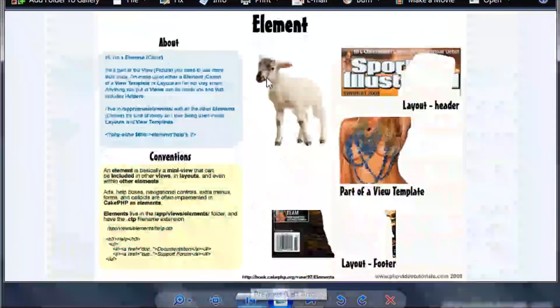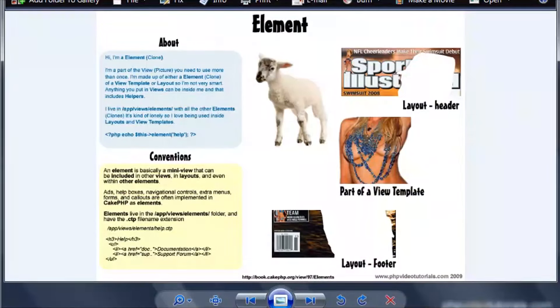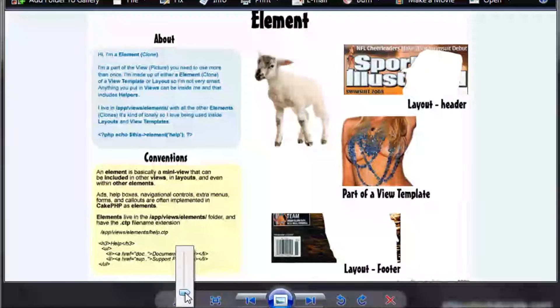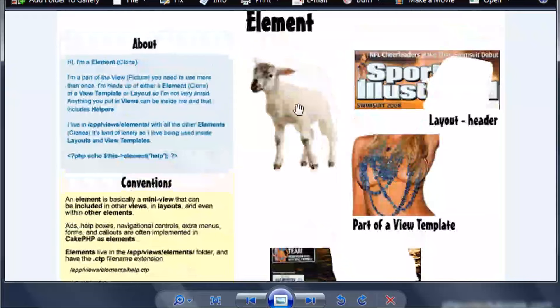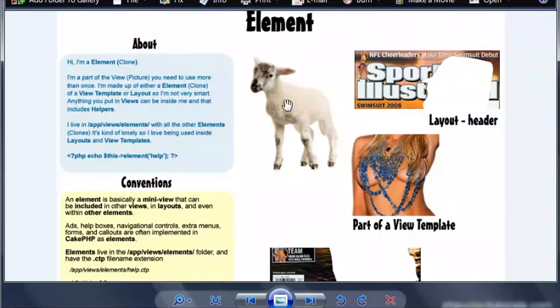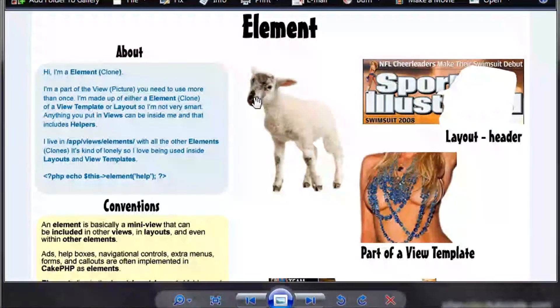Alright. So I see elements as a sheep. Remember Dolly the sheep? She was a clone. The first ever thing, living creature they cloned. Her name was Dolly. So I'm going to use Dolly. It's not actually Dolly. This is a cuter sheep. This is a little lamb. It's a baby sheep.